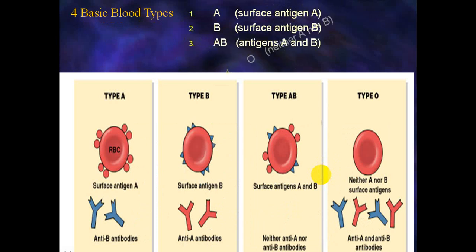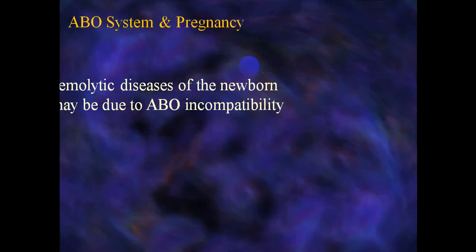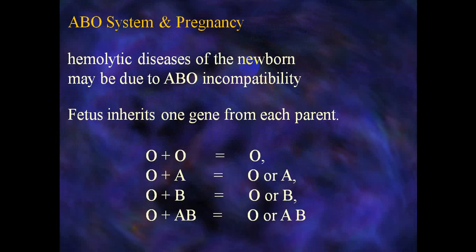Regarding basic blood groups: Group A has antigen A, Group B has antigen B, Group AB has both A and B antigens, and Group O has neither A nor B. The subject of this lecture is to understand ABO incompatibility and RH-negative hemolytic disease of the newborn, which may be due to ABO incompatibility of the fetus. Inheritance involves one gene from each parent: O+O gives O, O+A gives O or A, O+B gives O or B, O+AB gives O or A or B.